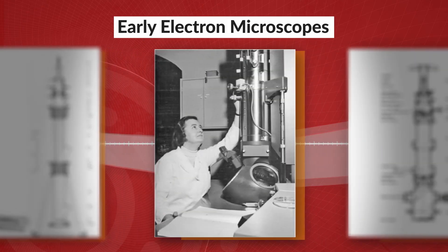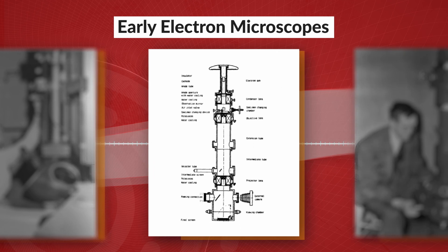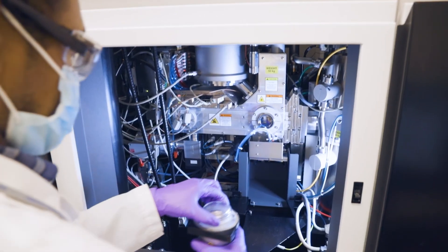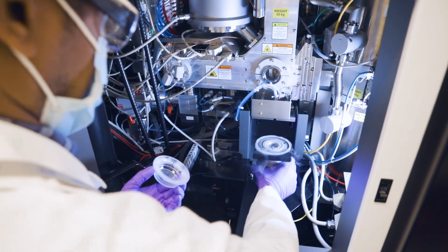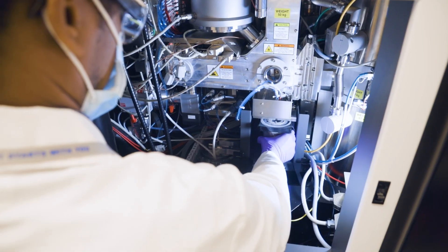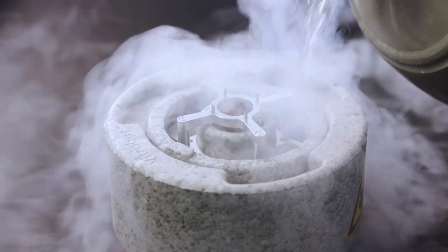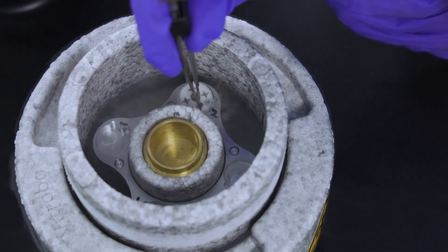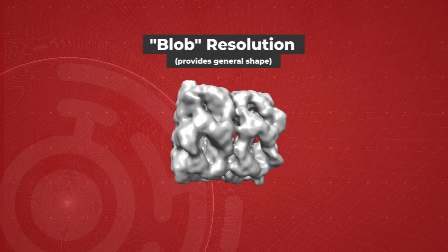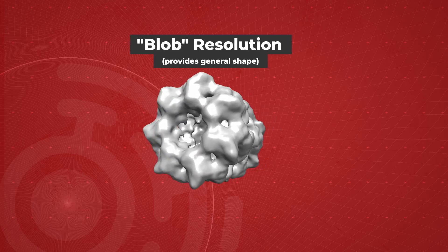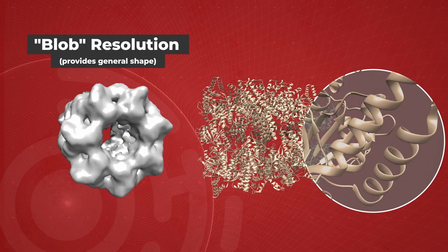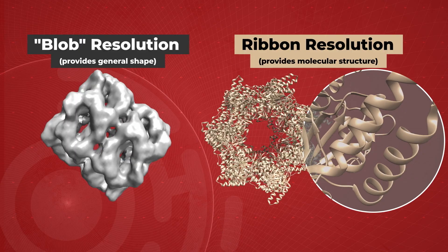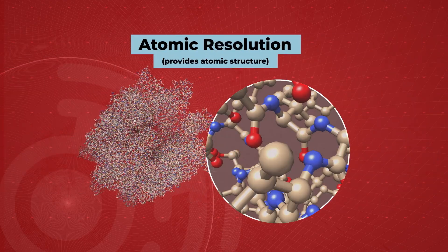Electron microscopes were invented in the 1930s, but it took decades for scientists to make them usable for studying biological molecules. Cryogenic electron microscopes, like the one seen here, work with frozen molecules. It protects them from electron radiation damage and also immobilizes the molecules in place so we can obtain sharper images. In the past 10 years, images produced with Cryo-EM went from looking more like blobs to very realistic pictures. And in 2020, it achieved an astonishing milestone — it was able to visualize atoms within a protein.